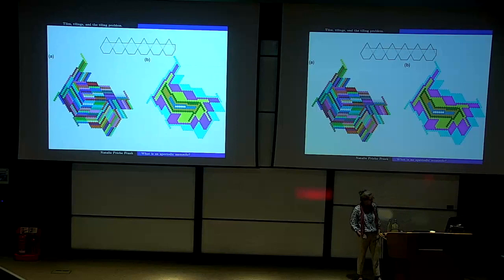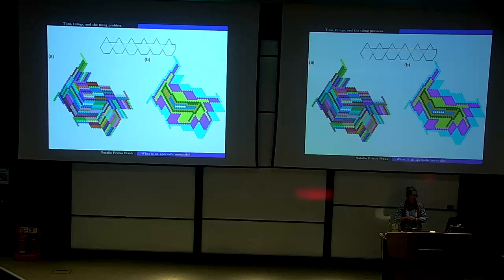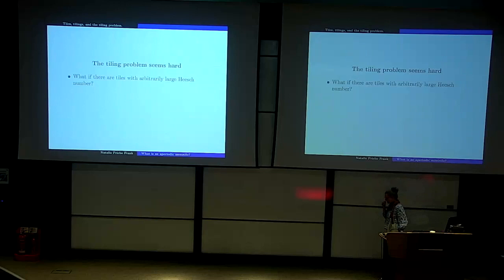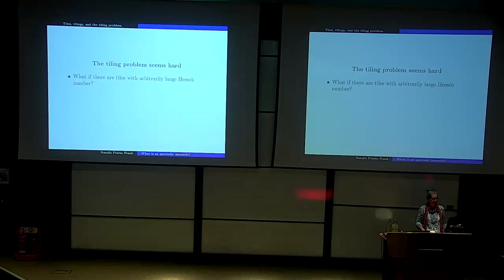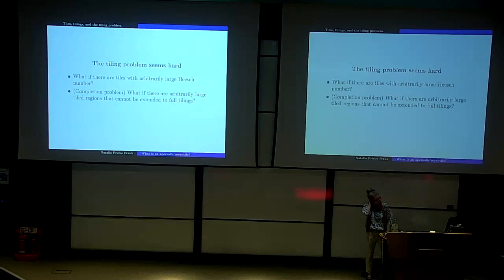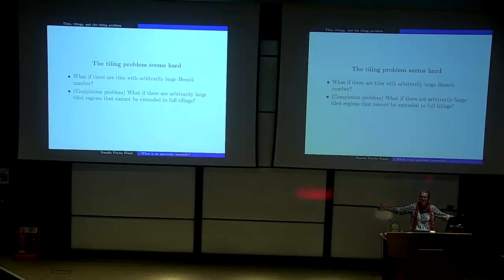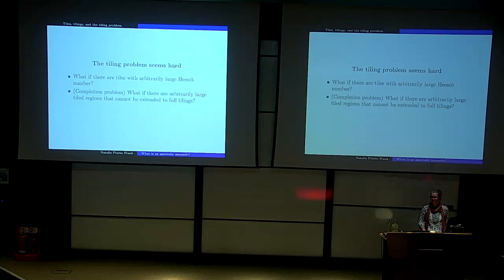What if there are tiles with arbitrarily large Heesch number? Then it would be really hard to say whether any given set of prototiles tiles the plane. And what if you had a set of prototiles where you could tile arbitrarily large regions, but those large regions couldn't be continued to infinite tilings? These things make the general tiling problem really hard to think about and to answer.